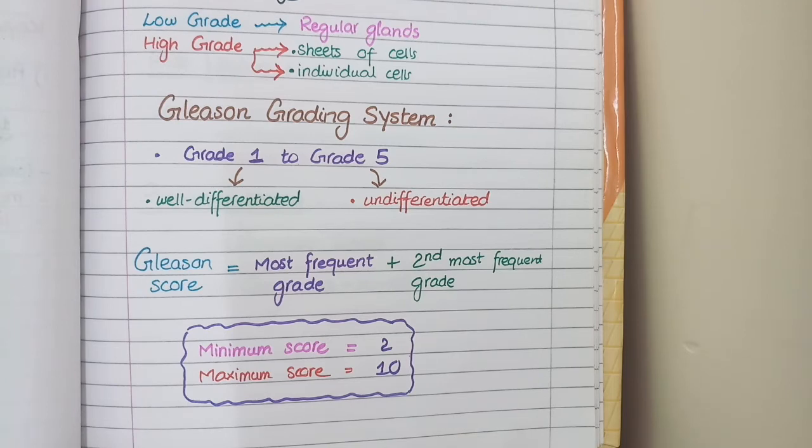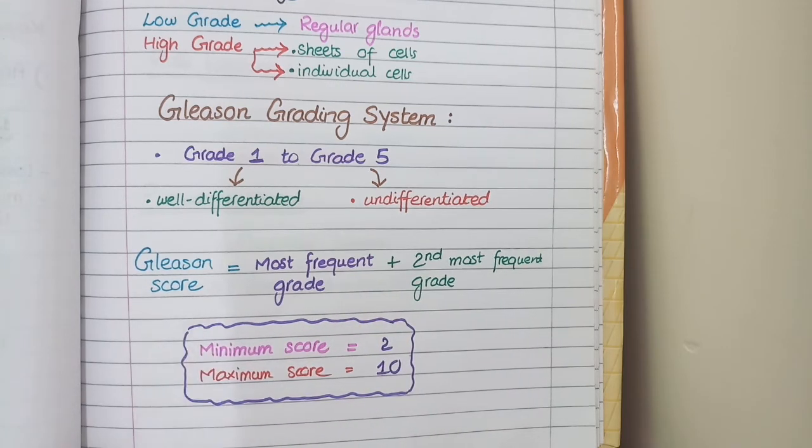Now in the second step, you add the grade of most frequent region which you see in the microscope and the grade of second most frequent region which you see under microscope. The addition of the grades of two most frequent regions is called Gleason score.